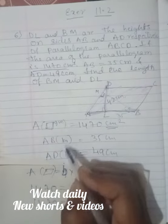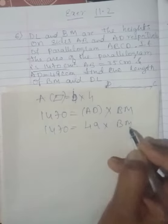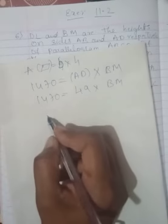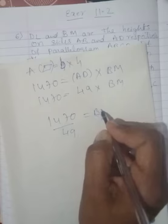So 1470 as it is. AD is given. How much is AD? Base, it is given for us, it is 49 centimeters. Write it. 49 into BM. We don't know. So what would be here?